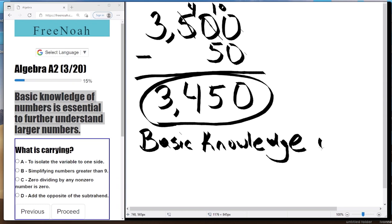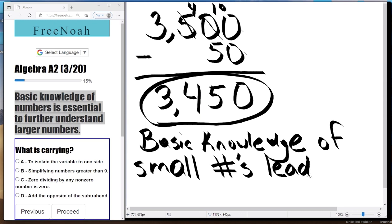So basic knowledge of numbers is essential to understanding larger numbers. It's very important that you learn your timetables. It's very important that you know what your basic 1, 2, 3, 4, 5, 6, 7, 8, 9, 10, and so forth and on. So basic knowledge of small numbers leads to easier calculations.